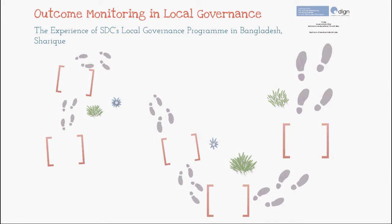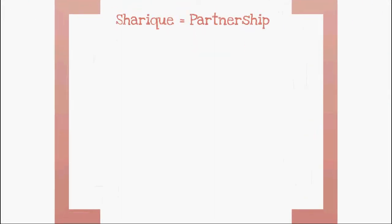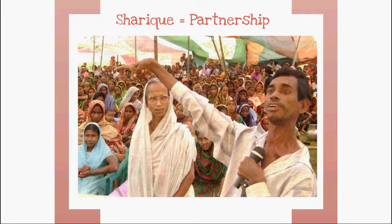The Local Governance Project Shariq has been using outcome monitoring to measure the performance and quality of local governance. This video shares Shariq's approach and some key lessons. Shariq aims at empowering poor men and women and the disadvantaged to claim their rights and to benefit from more effective service provision by the local governments in two regions of Bangladesh.